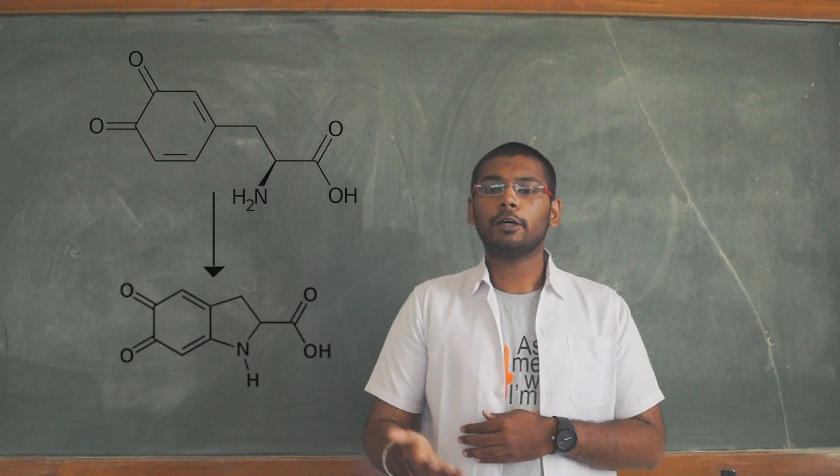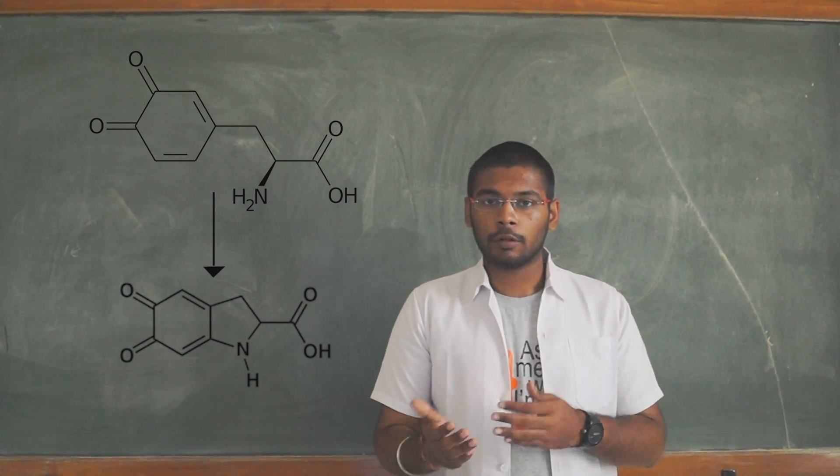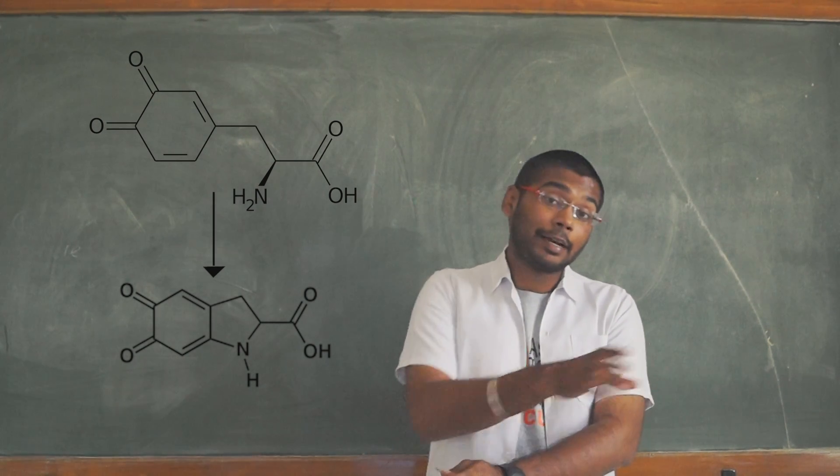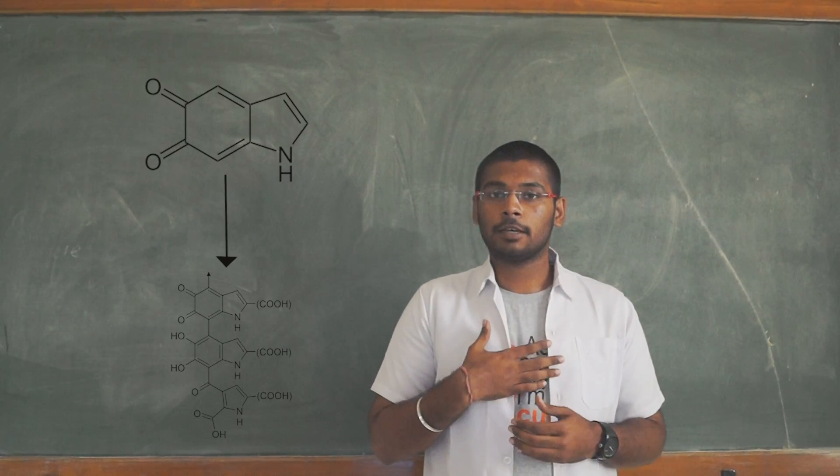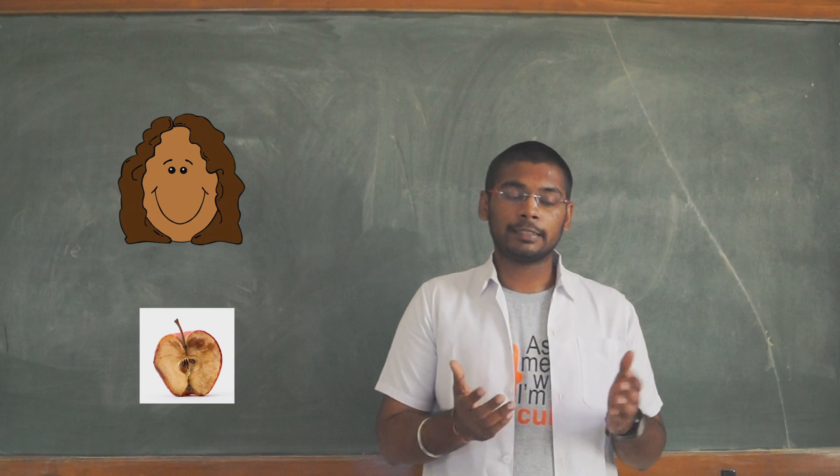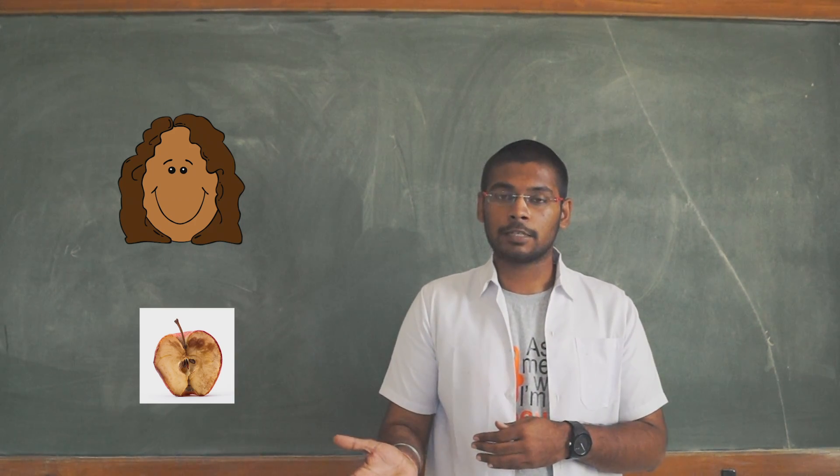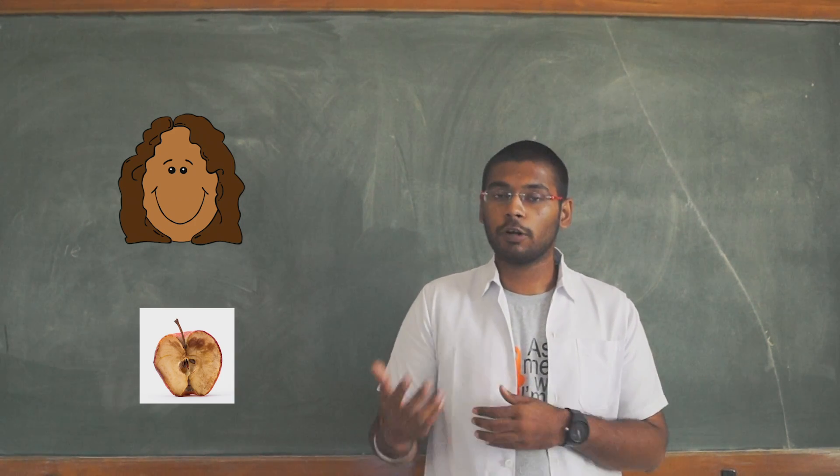DOPA-chrome, which is further getting oxidized to form leukocompound. Leukocompound, which is further getting oxidized to form indole and then melanin. Melanin which is present in our human cells is the same as melanin which is present in the apple cells, which is responsible for the brown coloration of an apple.